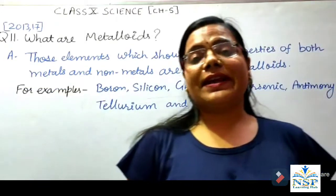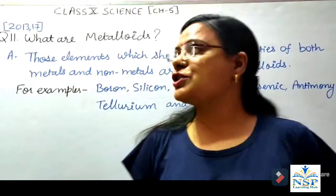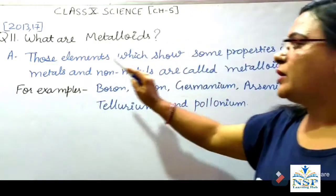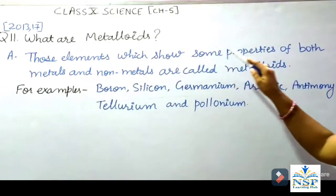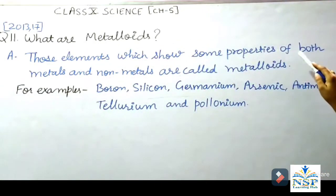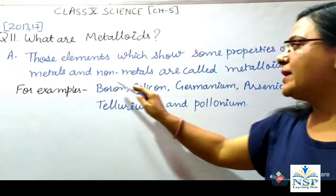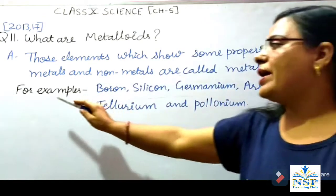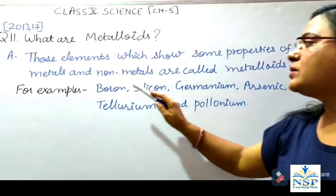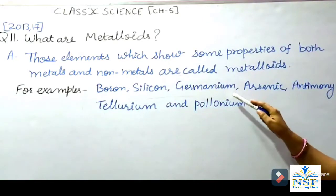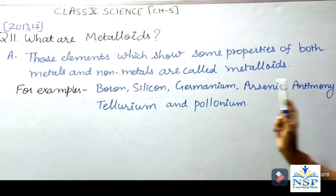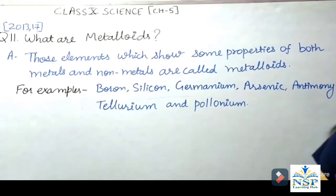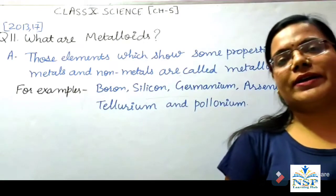What are metalloids? Those elements which show some properties of both metals and non-metals are called metalloids. For example, boron, silicon, germanium, arsenic, antimony, tellurium and polonium are examples of metalloids.